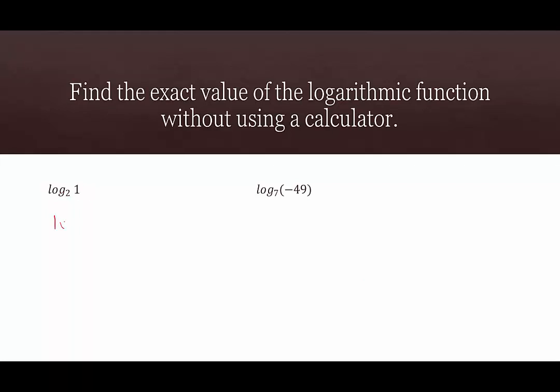For log base 2 of 1, we write 1 as a power of 2 — that's 2 to the power of 0. Then we pull the 0 out in front as the coefficient and get 0 times log base 2 of 2. This equals 0 times 1, which is 0. If you already know that when the argument is 1 the logarithm equals 0, you can skip that step thanks to the identity discussed earlier.